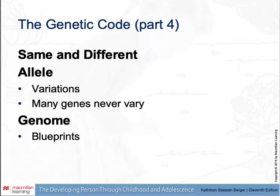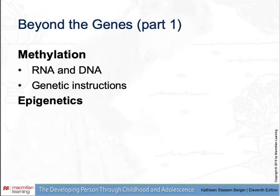Many genes are identical for every human being, and some genes vary slightly in their codes from one person to another. An allele is a variation that makes a gene different in some way from other genes for the same characteristics. Many genes never vary, and others have several possible alleles. The genome is the full set of genes — the instructions to make an individual member of a certain species; in other words, it's the blueprints.